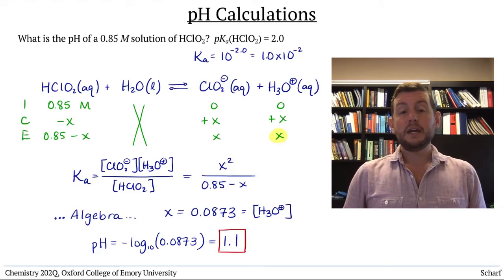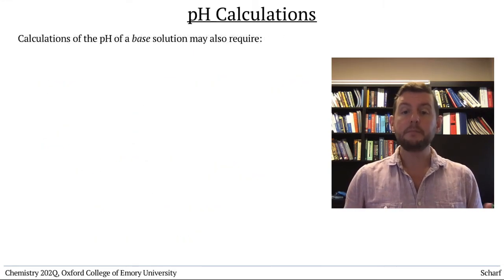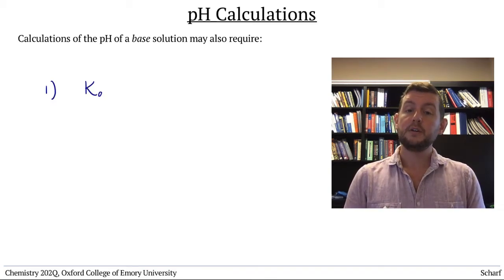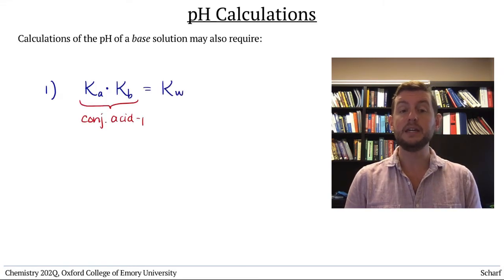The calculation of the pH of a base solution follows the same pattern, but often requires you to use two additional relationships that we've already discussed. First, for a conjugate acid-base pair, Ka times Kb equals Kw.